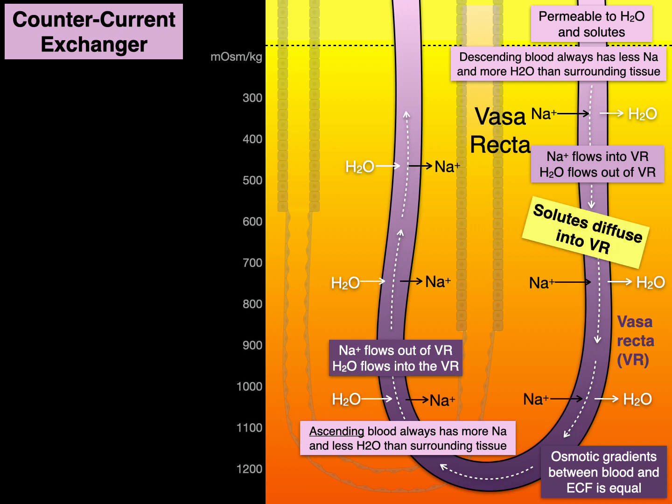So the descending limb of the vasa recta, solutes diffuse into the vasa recta. The ascending, solutes diffuse back out again.